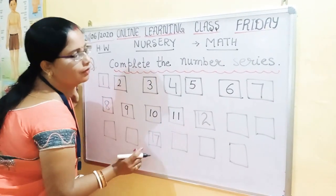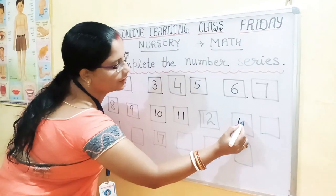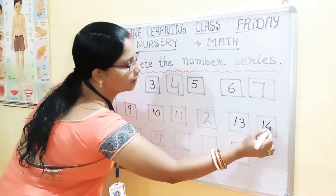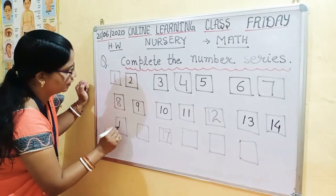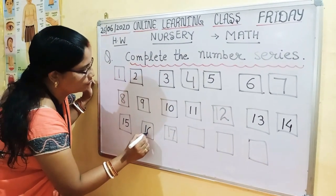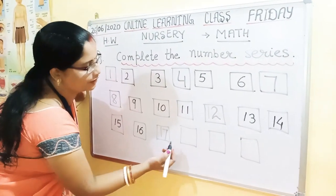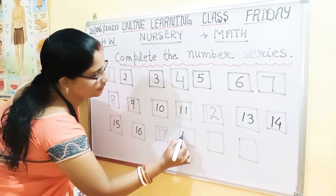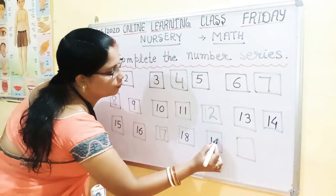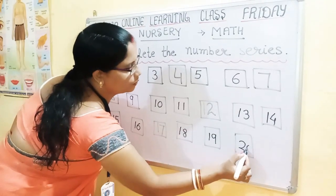1, 1 — 11. 1, 2 is already given. 1, 3 — 13. 1, 4 — 14. 1, 5 — 15. 1, 6 — 16. 1, 7 — already given. 1, 8 — 18. 1, 9 — 19. 2, 0 — 20.